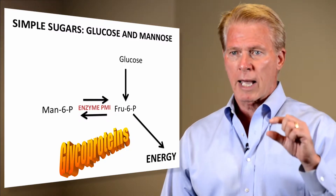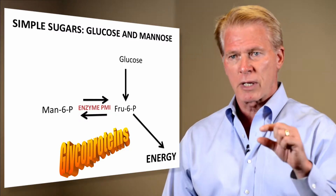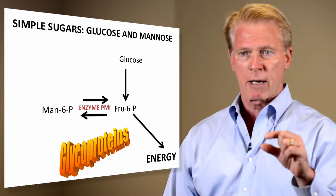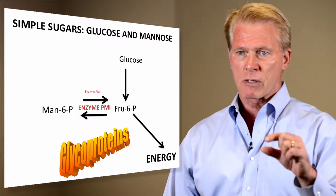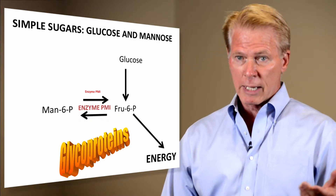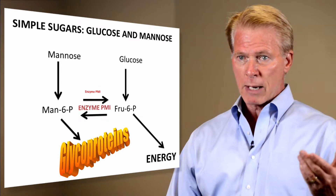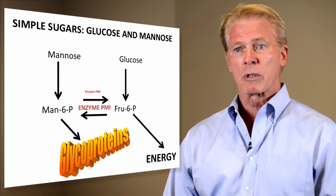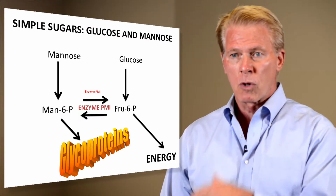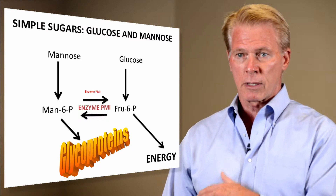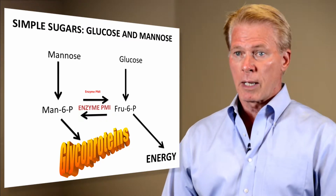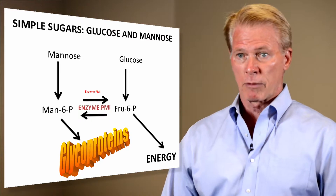This boy had a deficiency in that enzyme, so he couldn't make enough mannose 6-phosphate. But by giving him enough mannose, we were able to overcome that deficiency, normalize the small amount of glycoproteins he had, and save him.